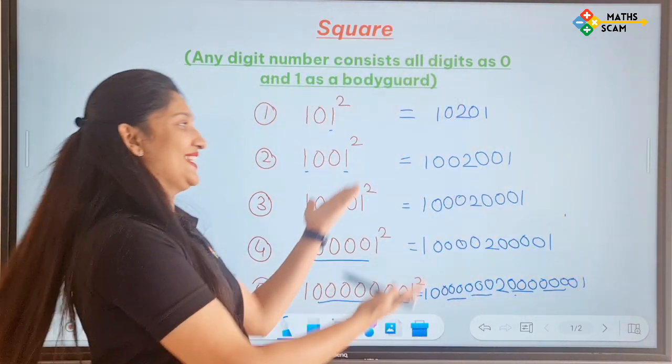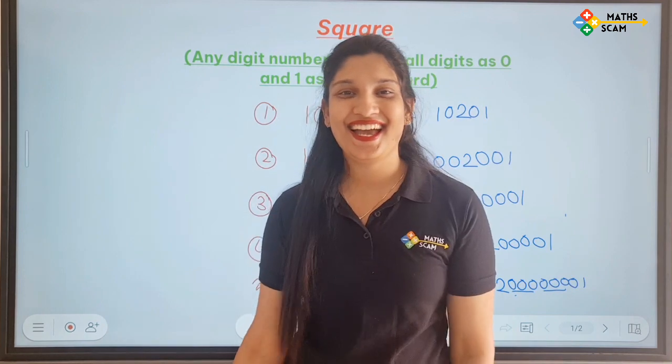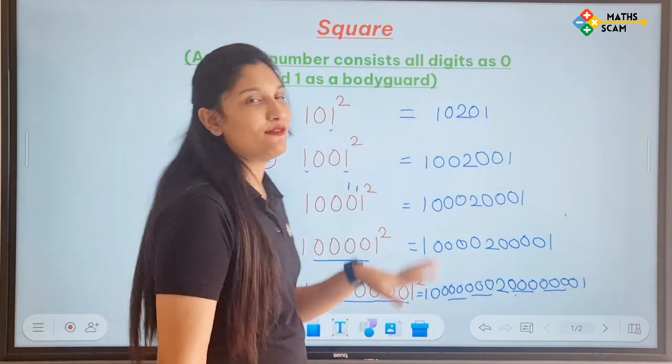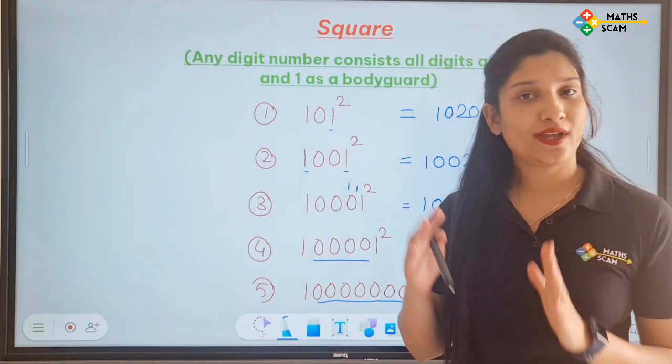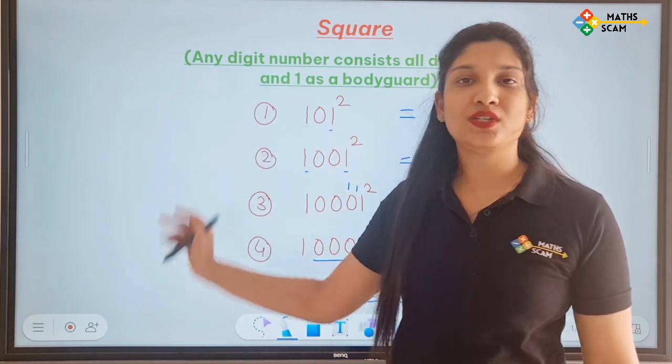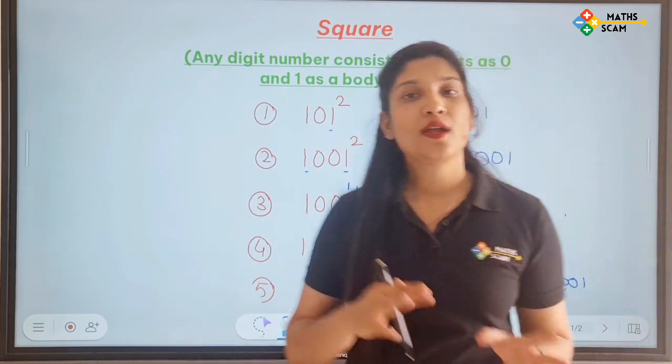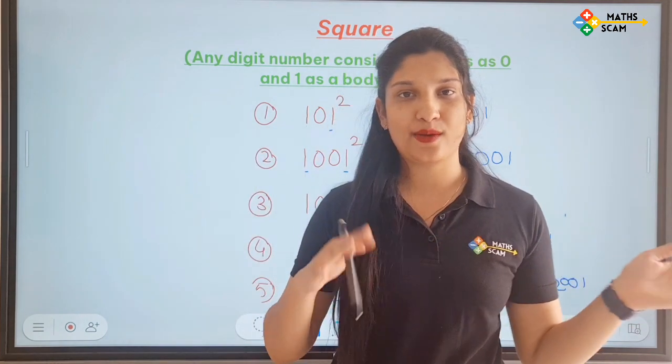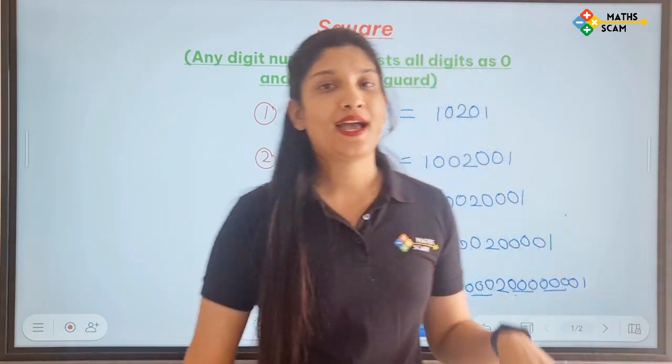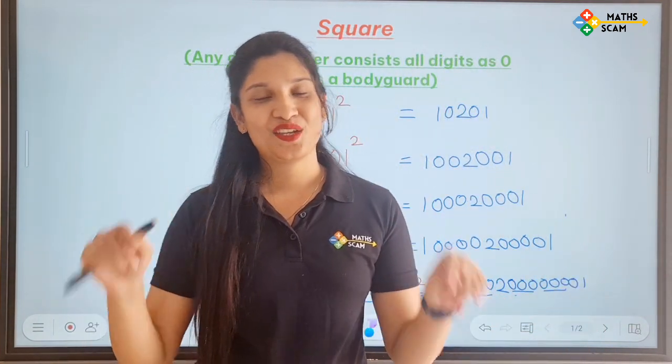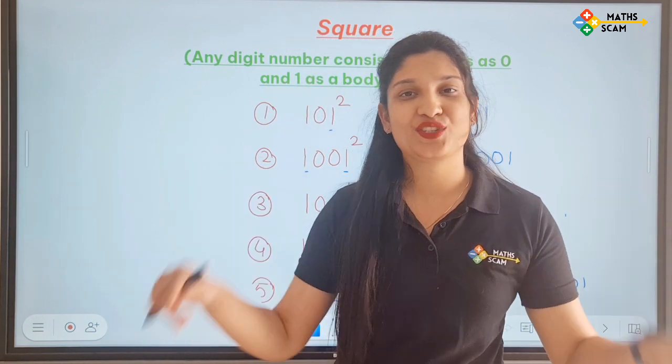And that's our choice trick. So what we did is, number of 1 for 2, so we wrote 2 in between. Then we count the number of 0's. The number of 0's we wrote before and after. Jitne 0's hai utne hi apko before and after. Same 0's. And then bodyguard. And so first and last digit has 1. And that was our today's trick.